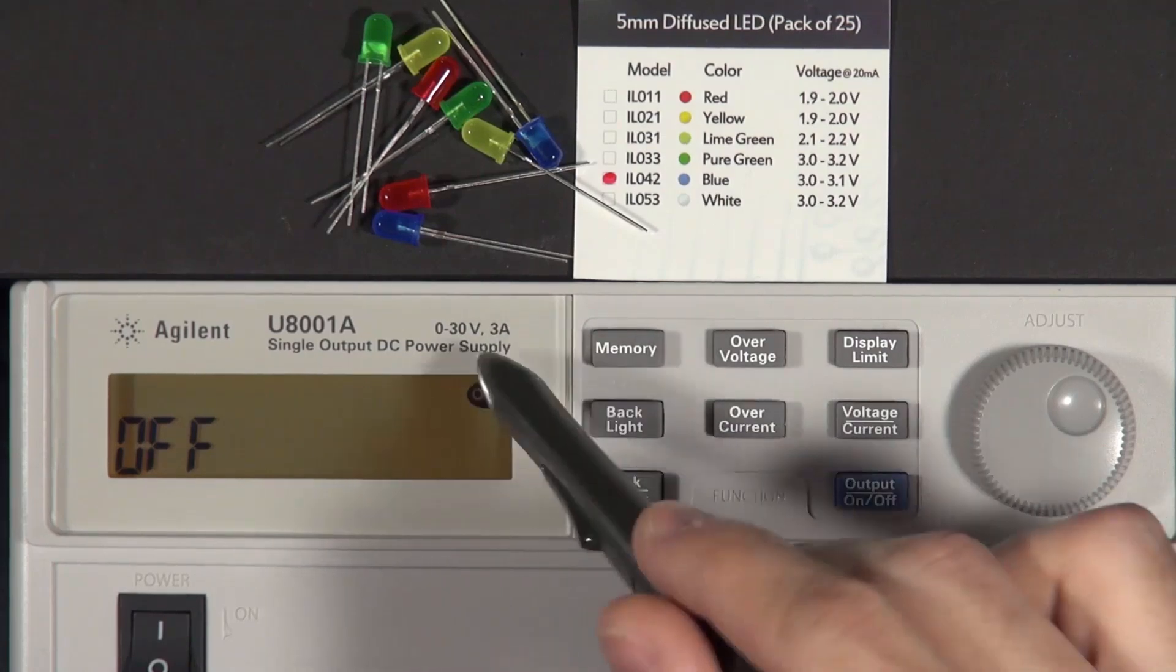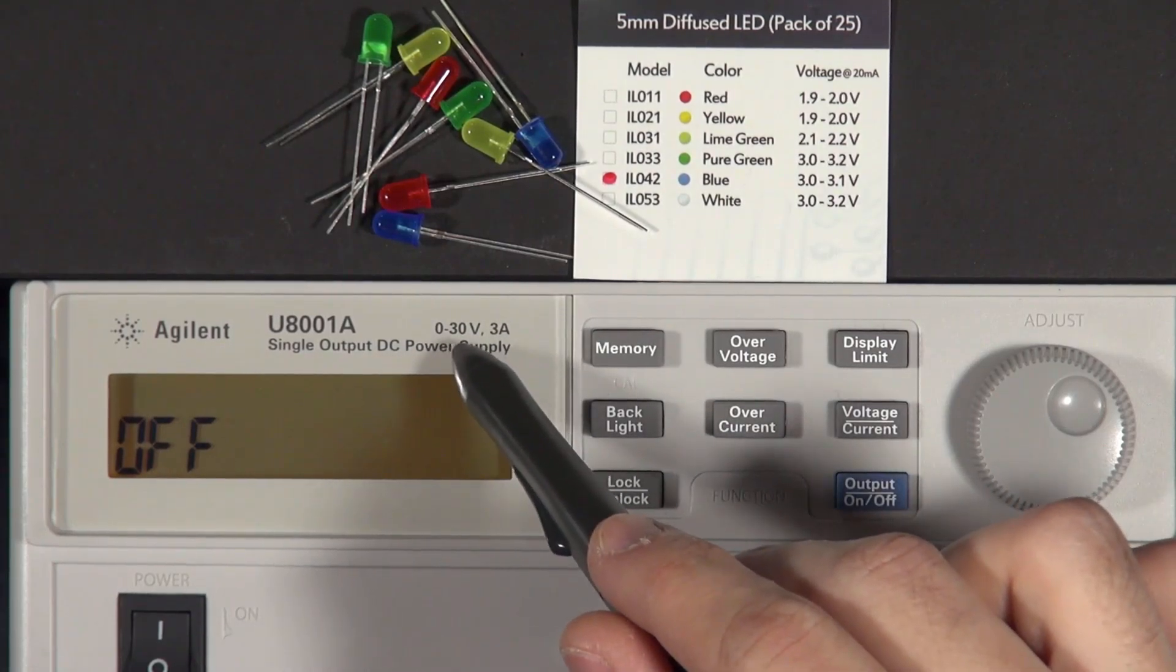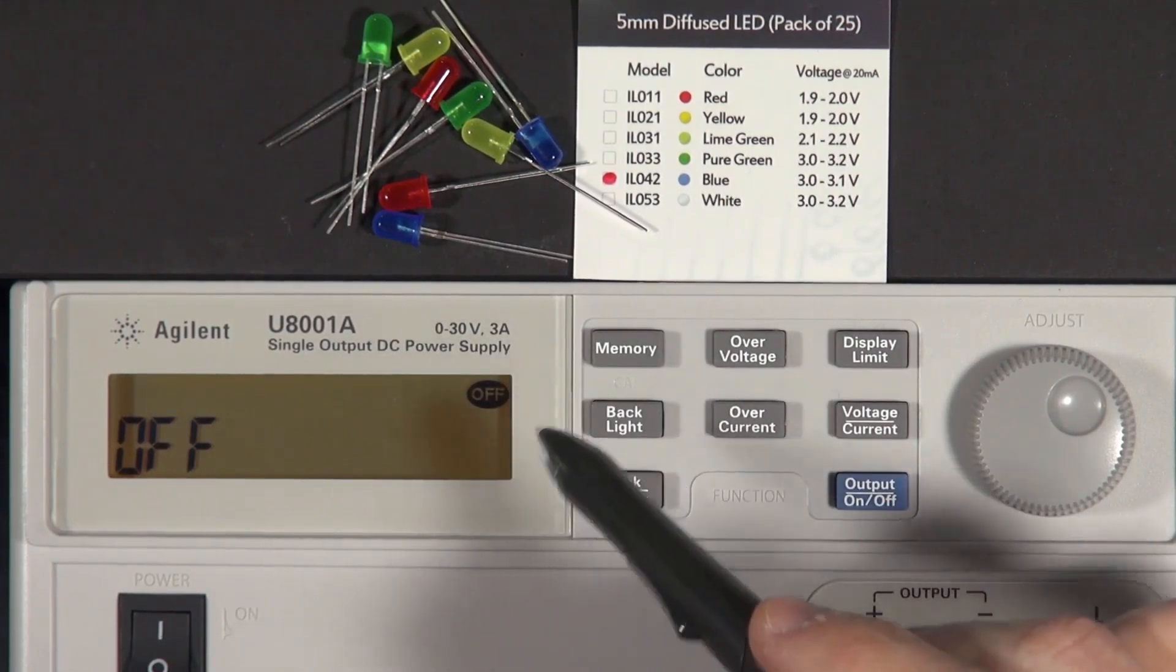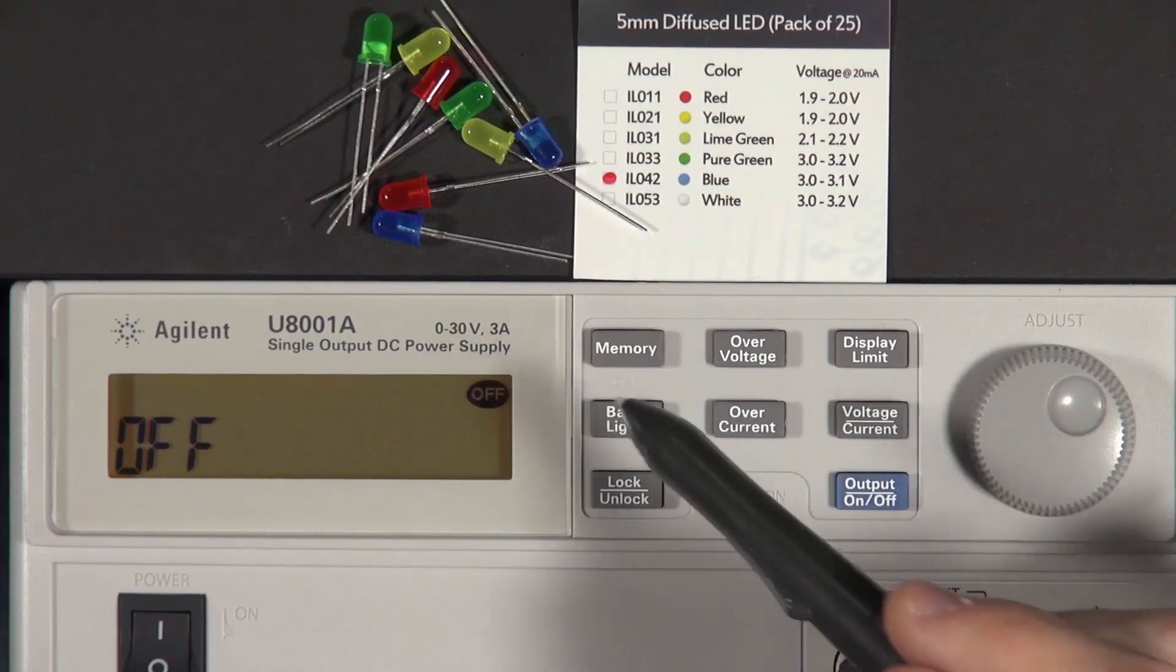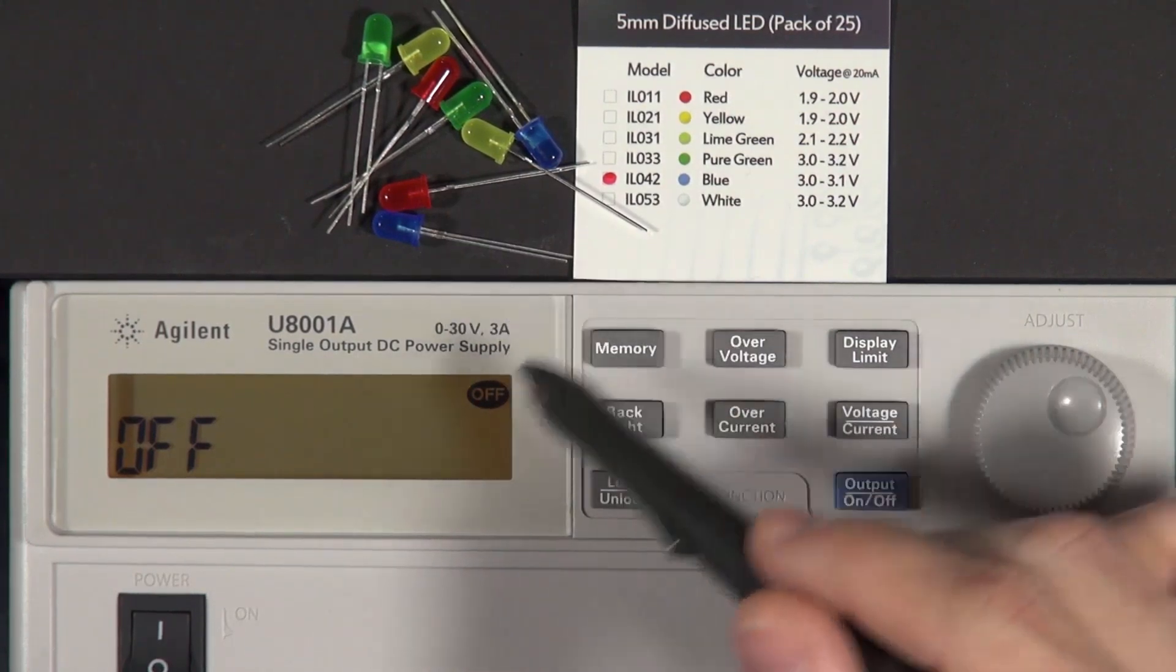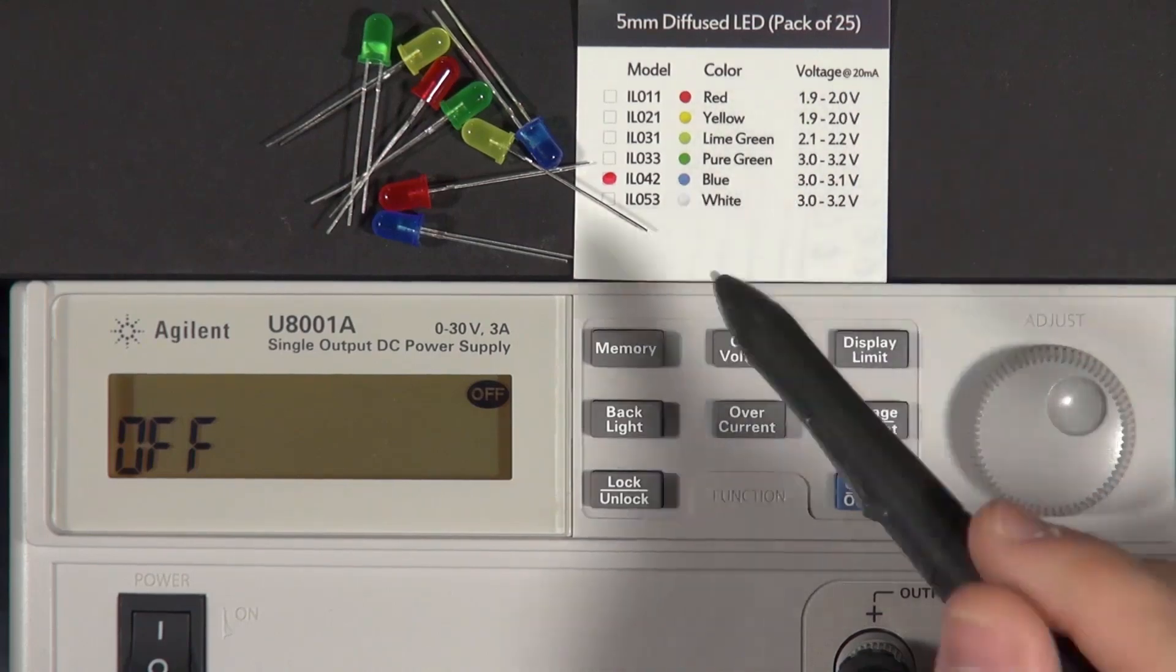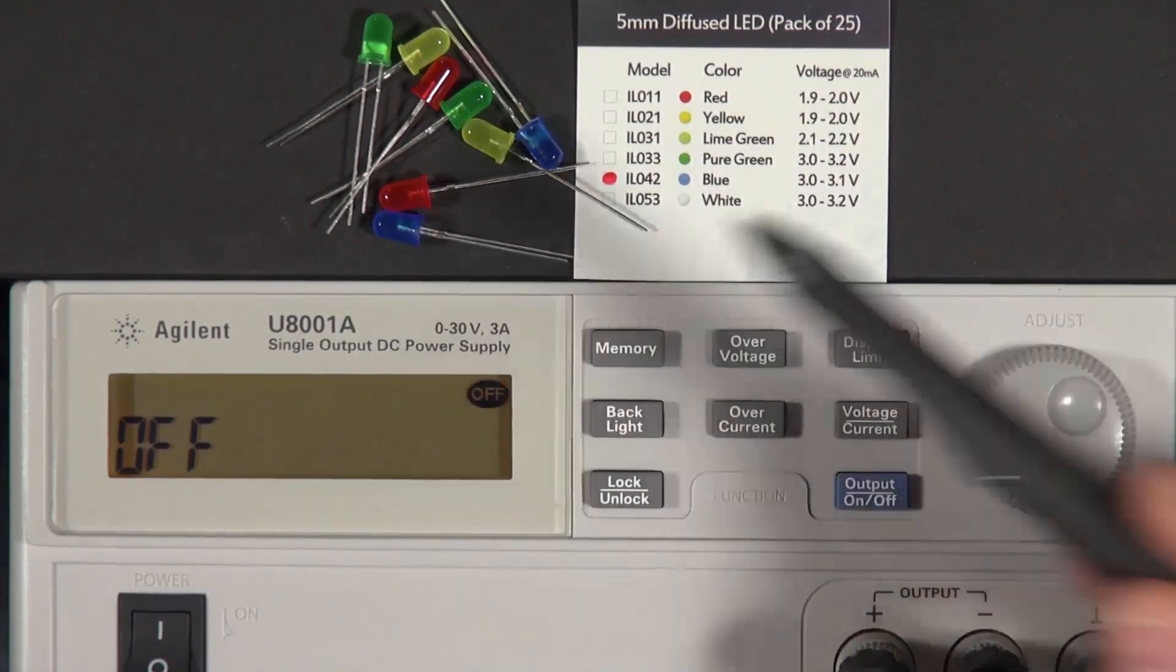And the power supply isn't going to, the power supply will give us the voltage that we select. And then it'll allow the circuit to draw up to 3 amps. And presumably the circuit, if it's one of these LEDs, should only draw 20 milliamps, not the whole 3 amps.